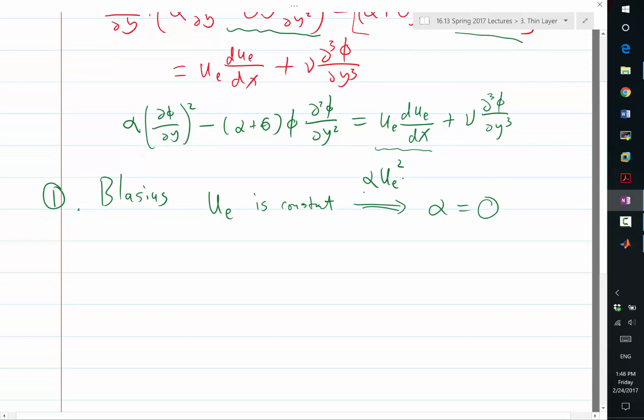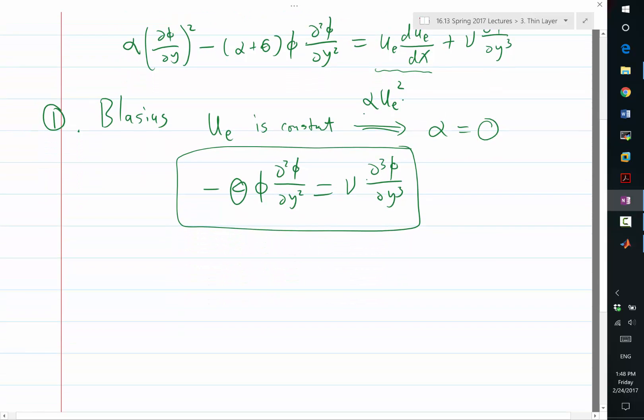So that simplifies us to this term is gone, all the alphas are gone. So minus theta times phi times second order derivative of phi would be equal to zero and the new partial cube phi partial y cube, right? So we get something that only has two terms.